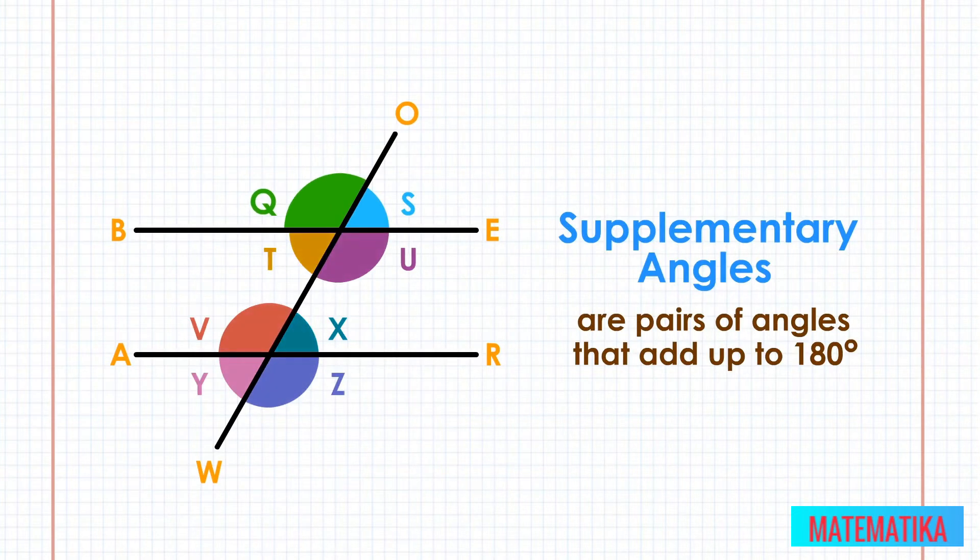we know that angle Q and angle S are supplementary. Together, the two supplementary angles make half of a circle. Supplementary angles are not limited to just transversals. In this example, the supplementary angles are QS,